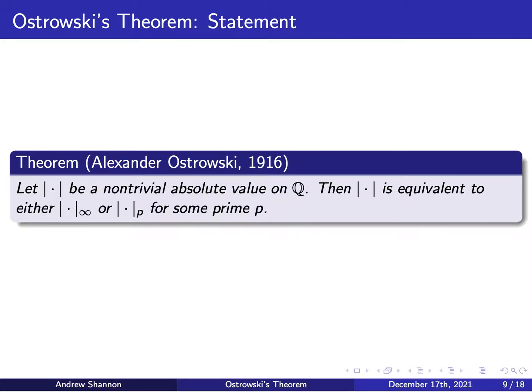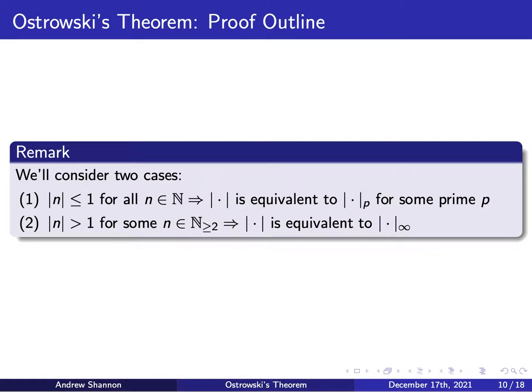So now I'll introduce Ostrowski's theorem itself. Essentially, it states that if double bar is a non-trivial absolute value on Q, then it's equivalent to either double bar infinity — the usual absolute value — or some p-adic absolute value for some prime p. To prove this, we'll consider two cases. In case one, if double bar of n is less than or equal to one for all natural numbers n, we'll show that double bar has to be equivalent to double bar sub p for some prime p. In case two, if there is some natural number greater than or equal to two such that double bar of n is strictly greater than one, then we'll show that double bar has to be equivalent to double bar infinity.